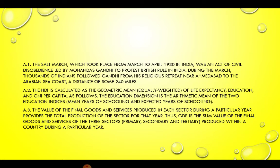Answer 1. The Salt March, which took place from March to April 1930 in India, was an act of civil disobedience led by Mohandas Gandhi who protested British rule in India. During the march, thousands of Indians followed Gandhi from his religious retreat near Ahmedabad to the Arabian Sea coast, a distance of some 240 miles.